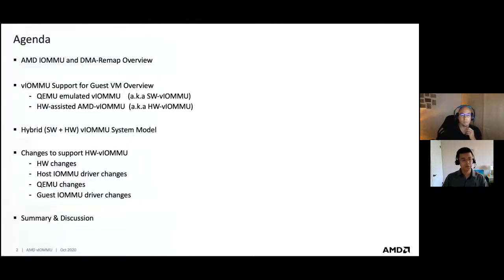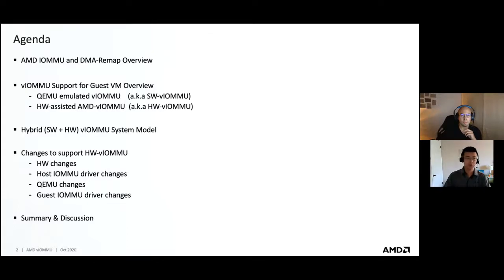Here is the agenda for today's presentation. At the beginning, I will give a brief overview about AMD IOMMU and how DMA Remap works in this hardware. For VIOMMU support inside a guest VM, there are two types of VIOMMU. The first one is QEMU emulated VIOMMU, also known as software VIOMMU. The second one, the core of today's presentation, is the hardware-assisted AMD VIOMMU.